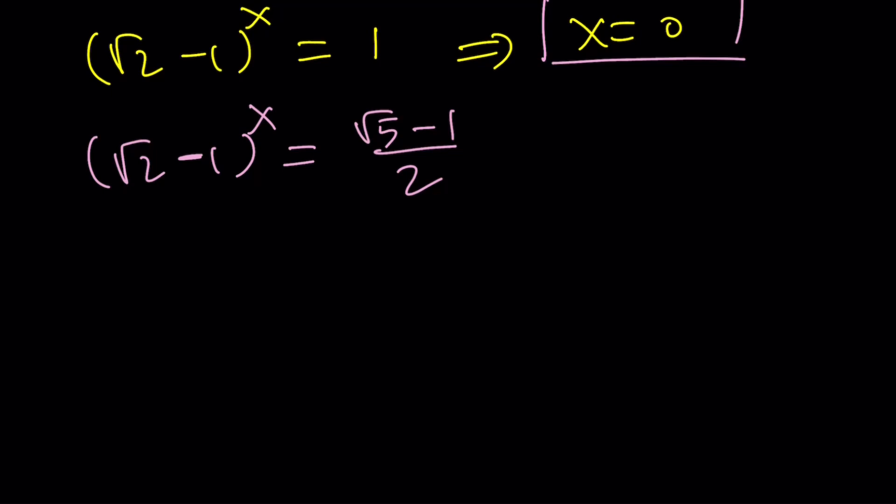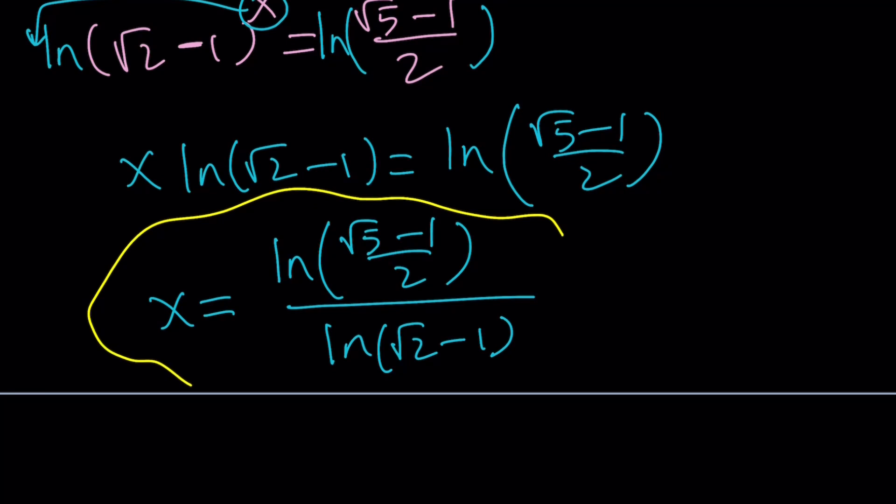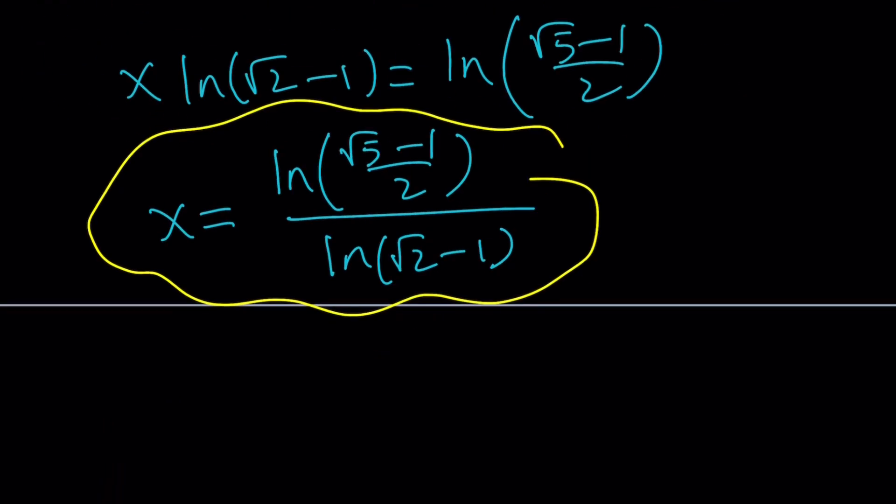Now from here we can ln both sides and that's going to bring the exponent down and we're going to get x·ln(√2-1) = ln((√5-1)/2). And by division we're going to get the value of x which is ln((√5-1)/2) divided by ln(√2-1). That should be the x value but that's not the only x value because x=0 is another solution. So we got two solutions for this, so you should see two intersection points.